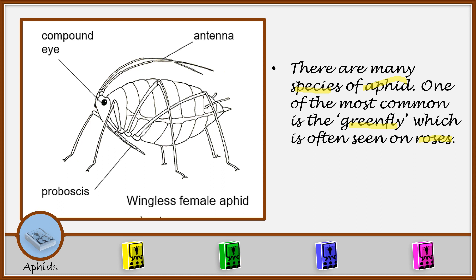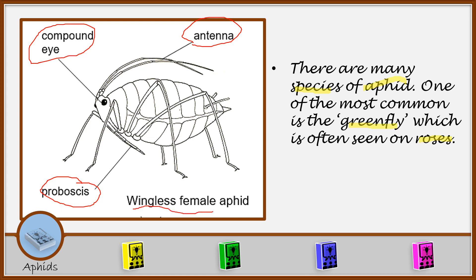Those are the aphids. If you look at the structure of the aphid here, you will see that it has a compound eye and antennae. It has the proboscis, which is used for sucking. It is wingless, and this one is a female aphid.